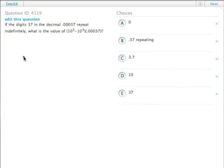So the digits 37 in the decimal 0.00037 repeat indefinitely, and we need to figure out the value of this.